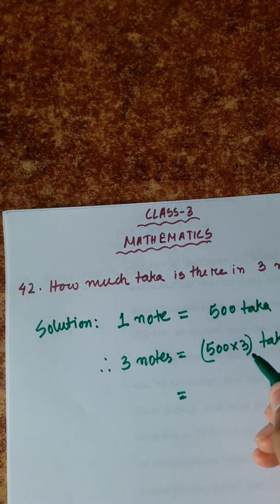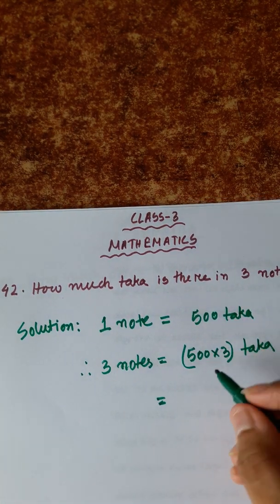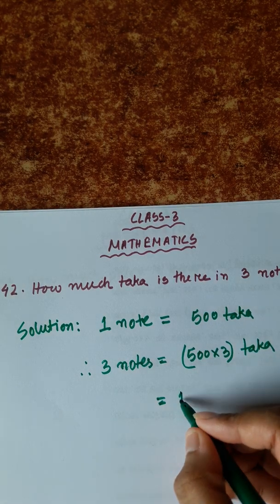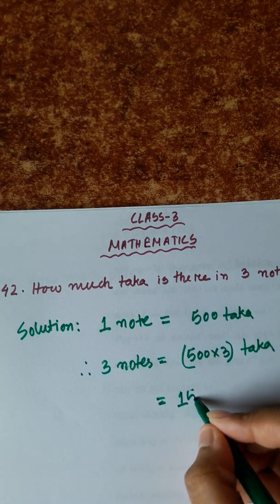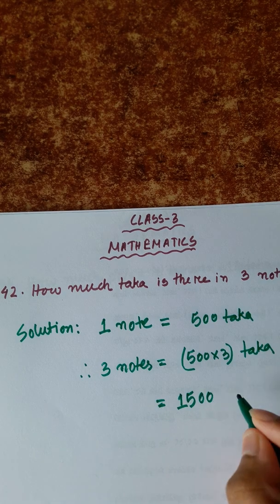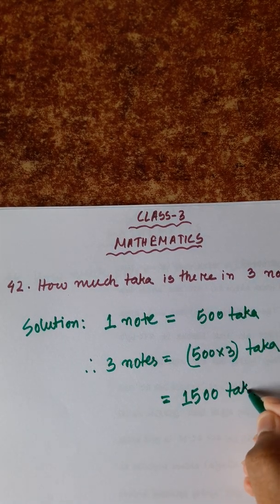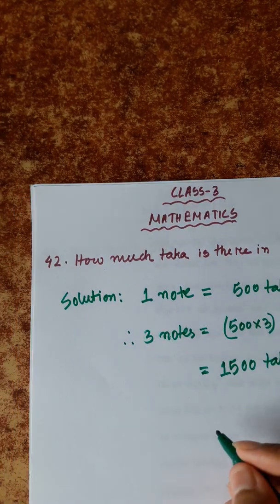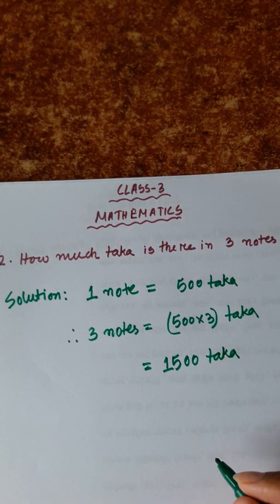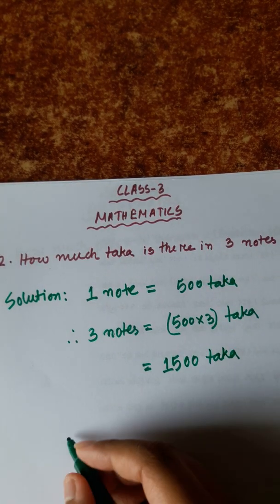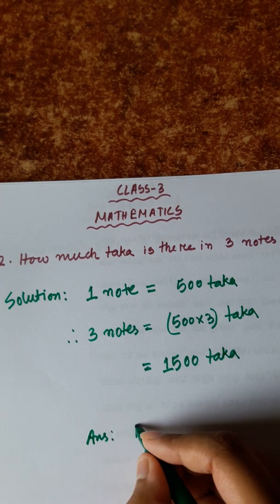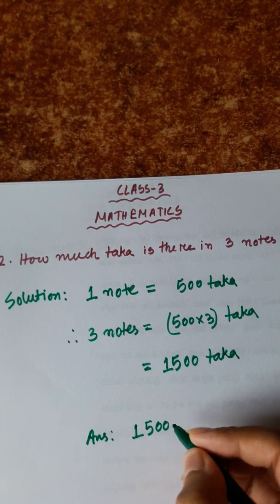We can solve this multiplication: 5 into 3 is 15, then add a zero. So the answer is 1500 taka. Therefore, 3 notes of 500 taka is equal to 1500 taka.